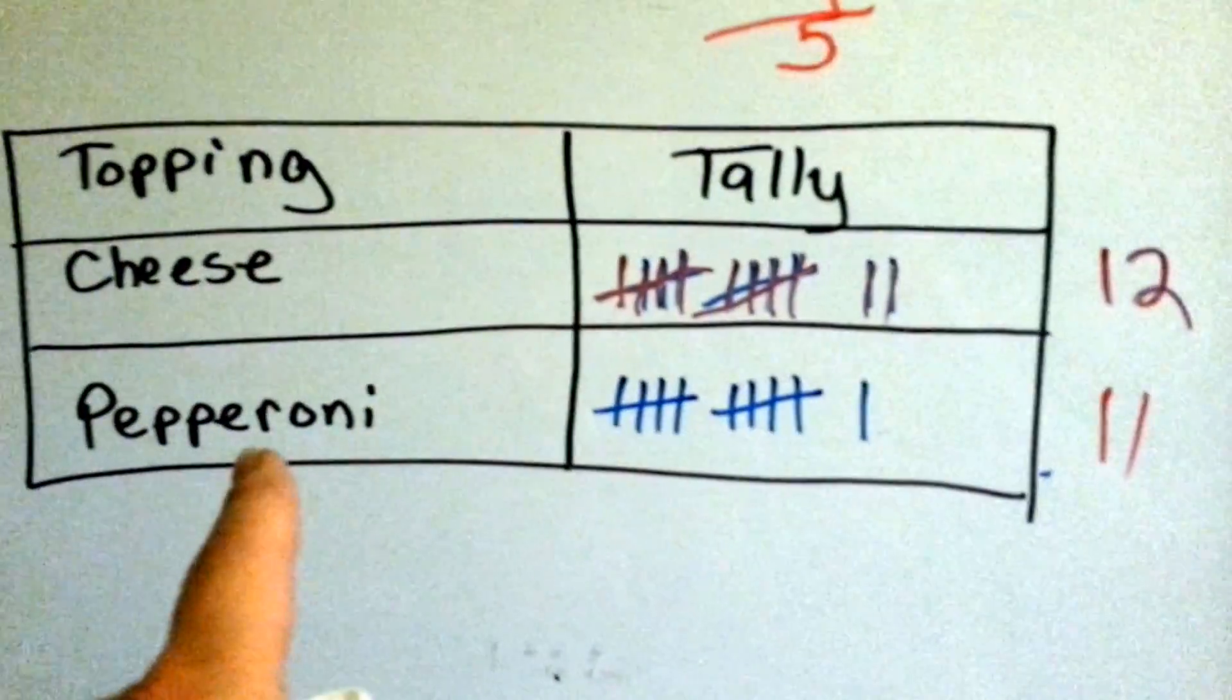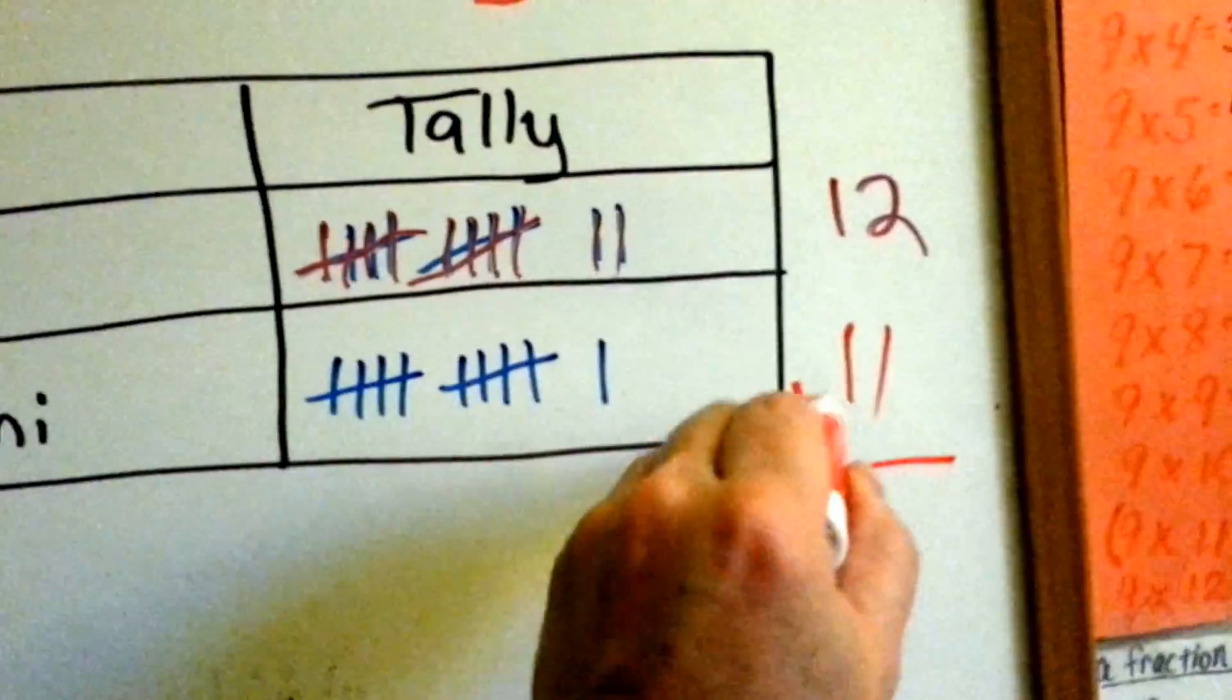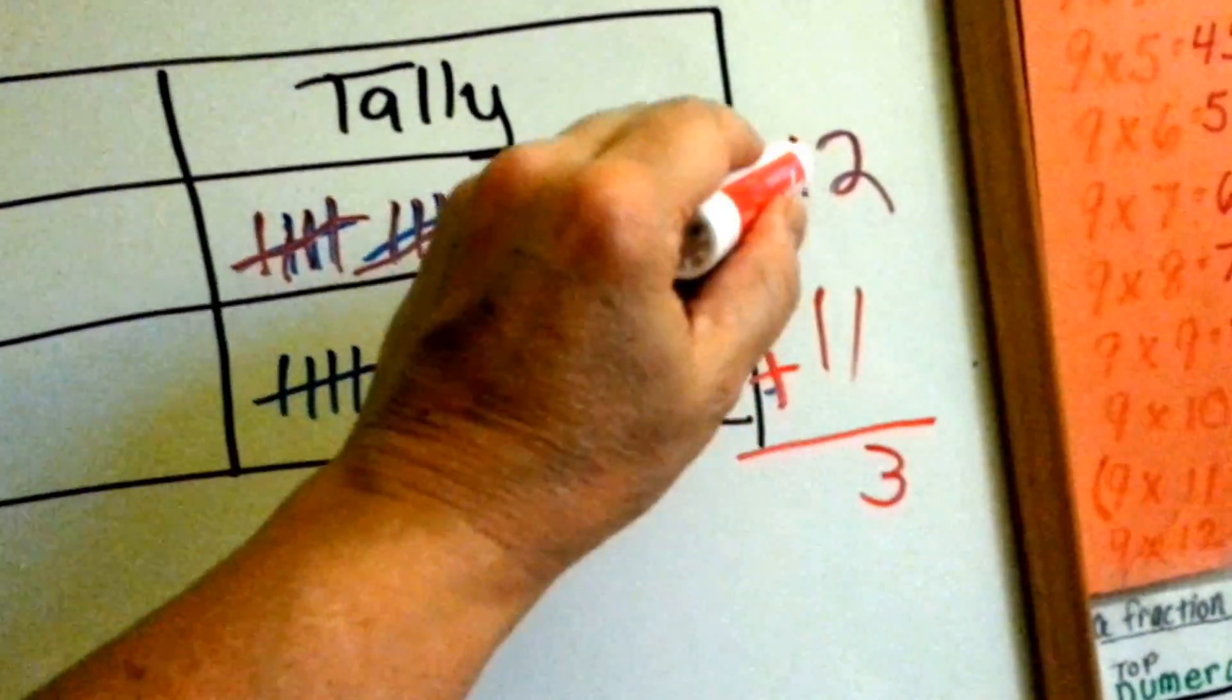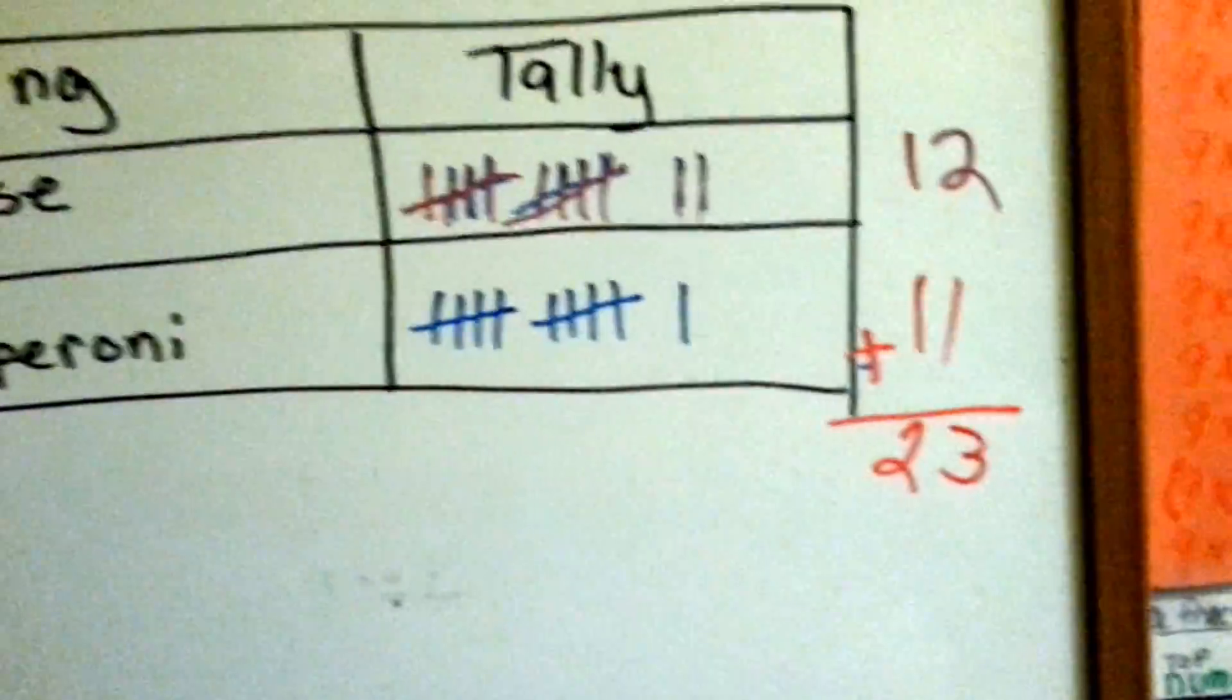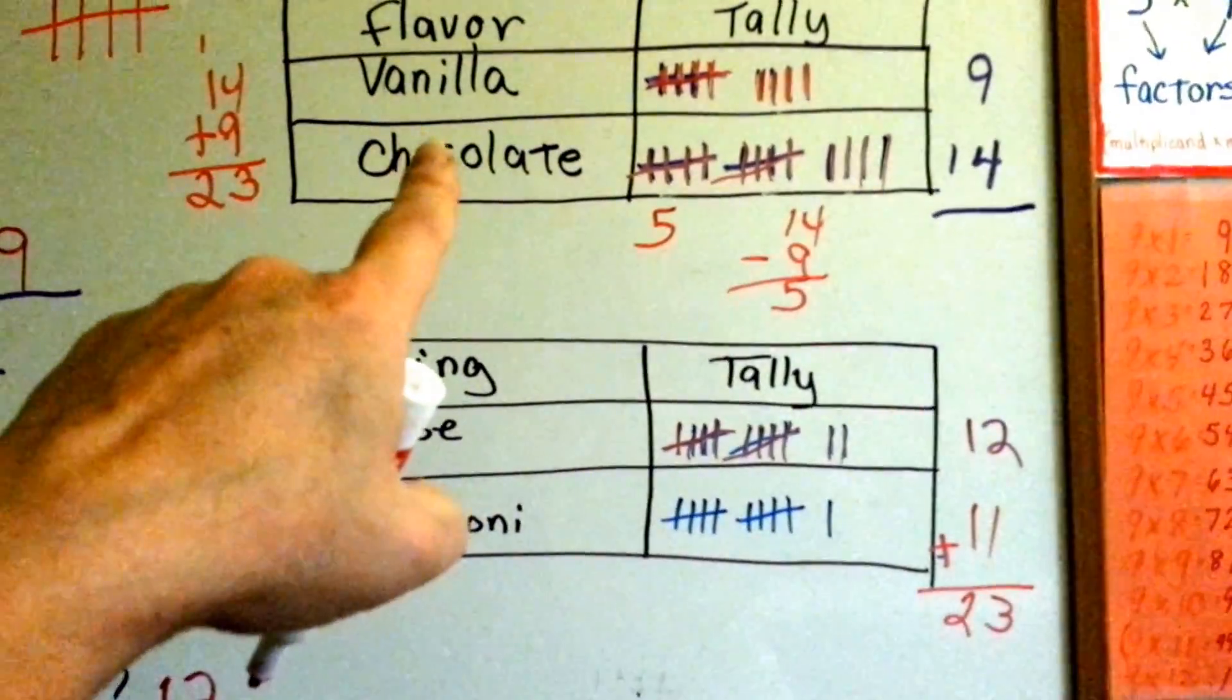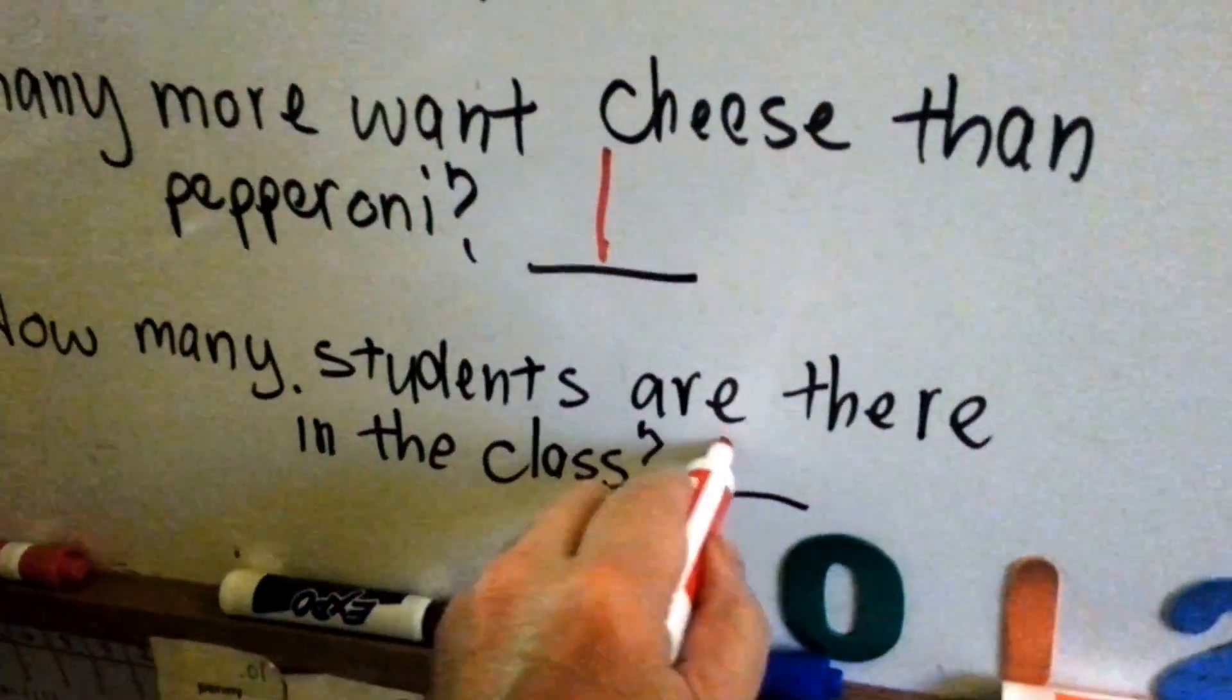How many voted for the cheese and pepperoni pizzas? 12 and 11. If you add 12 and 11, 2 plus 1 is 3, 1 and 1 is 2. That's 23 votes. So guess what? 23 children voted for vanilla and chocolate and 23 children voted for cheese and pepperoni. I would say there's 23 children in the classroom, right?